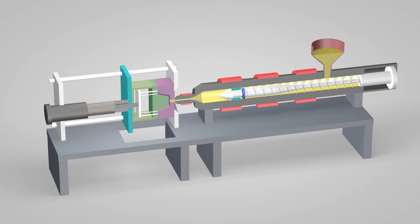An injection molding machine has three main parts: the injection unit, the mold, and the clamp.